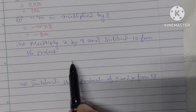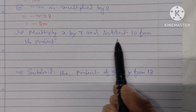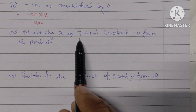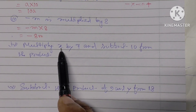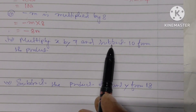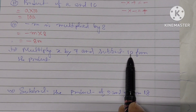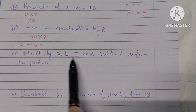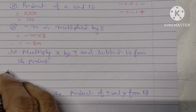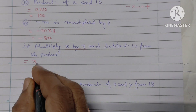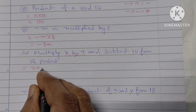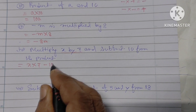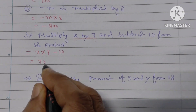Next one: multiply x by 7 and subtract 10 from the product. That gives us x into 7 minus 10, which is 7x minus 10.